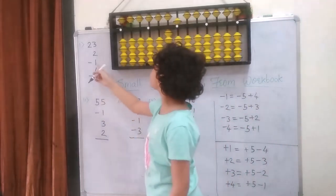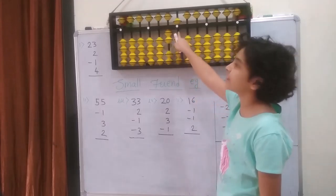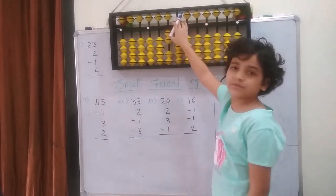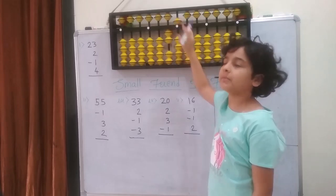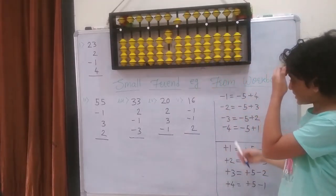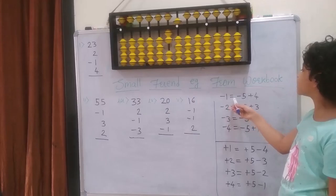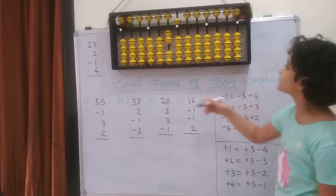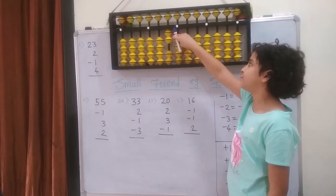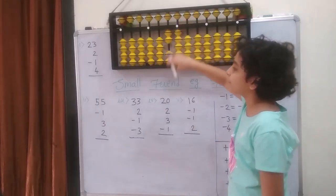Then I am going to minus 1 from it. I cannot because I have no beads left. And we can use 5 because it is available. So we are going to use the formula, which is minus 1 equals to minus 5 plus 4. Minus 5 and plus 4: 1, 2, 3, 4.